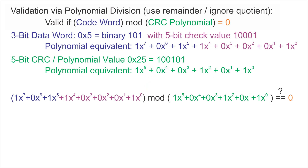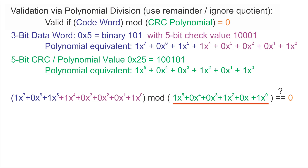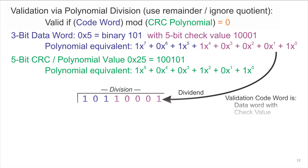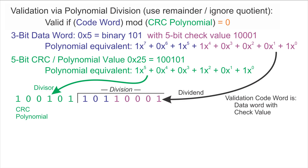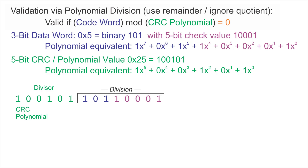The idea is that the codeword is valid if the codeword polynomial — x to the 7th plus x to the 5th plus x to the 4th plus 1 — mod the CRC polynomial x to the 5th plus x squared plus 1, is zero. So we're going to compute the remainder after division and see if it's zero or not. For long division, we take the coefficients of the codeword as the dividend and the coefficients of the CRC polynomial as the divisor, and we perform a long division algorithm.